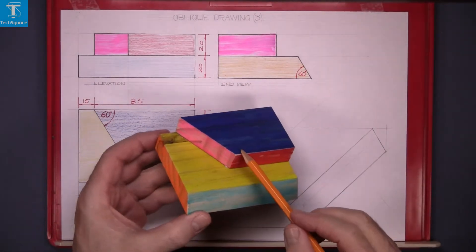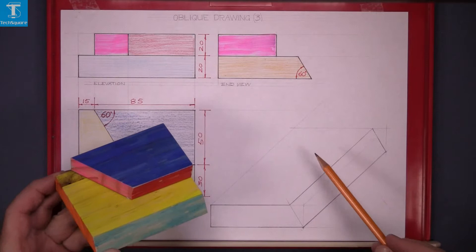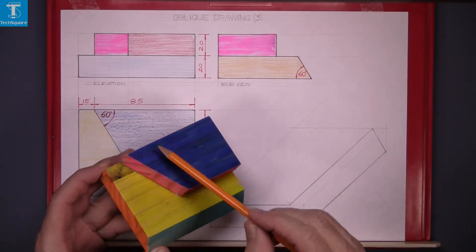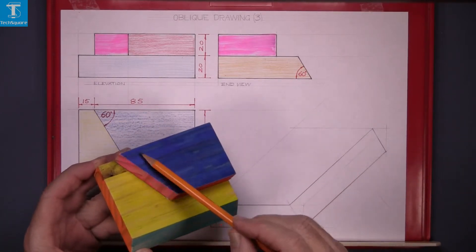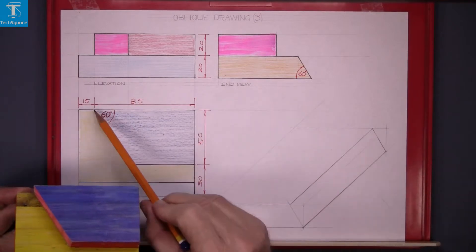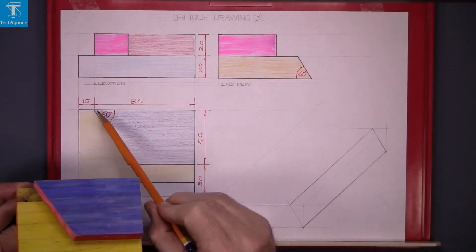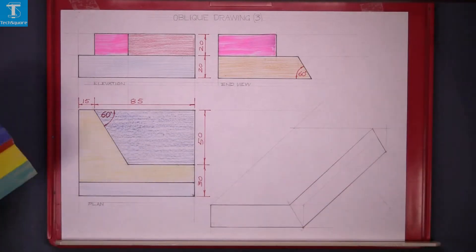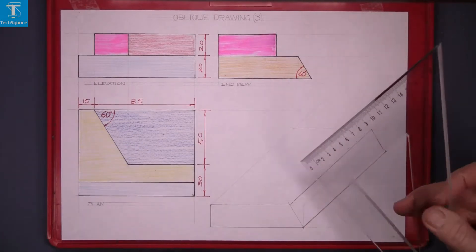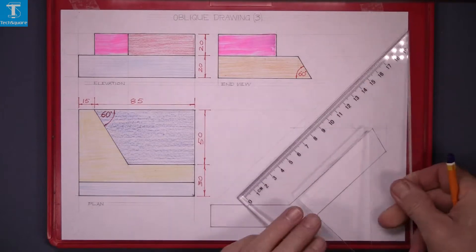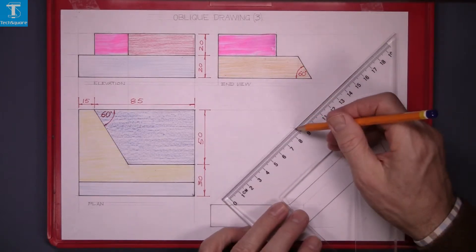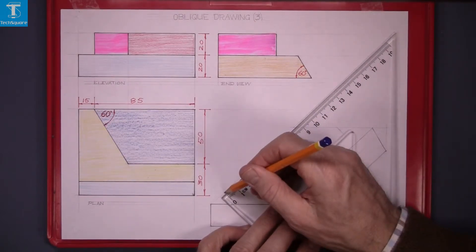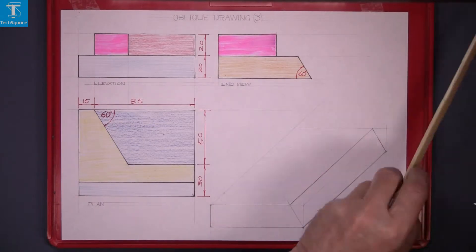Now the block on top, the length of that side there on your plan here it's 85. Mark from the back point 85 along the far line there, mark the point there which is the end of the piece.